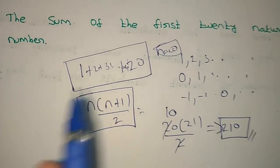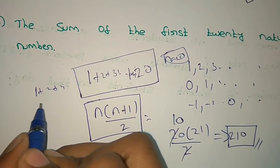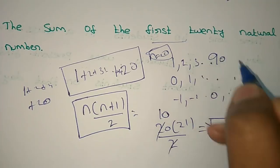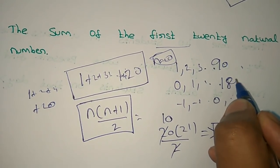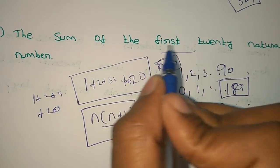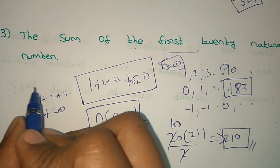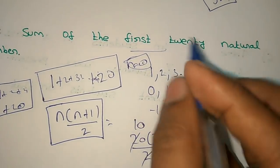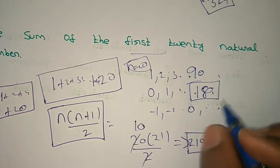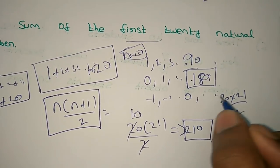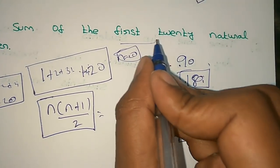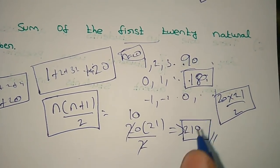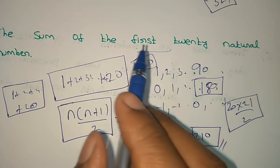If you have time during the exam, you can also manually add from 1 to 20. The first twenty numbers: you can add the first and end numbers together. The sum of the first and last number, multiplied, gives the same result.